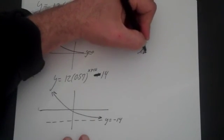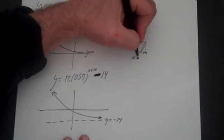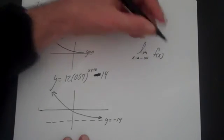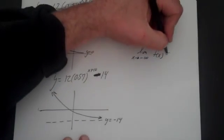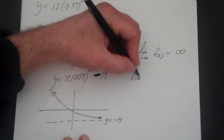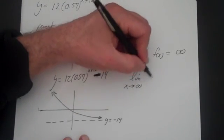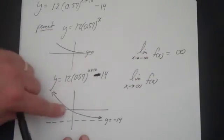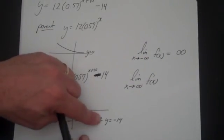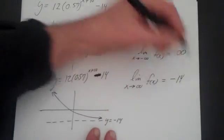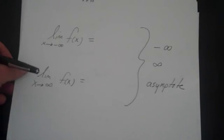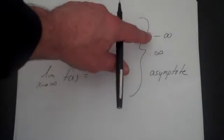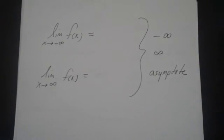The graph remains more or less the same shape. The limit as x goes to negative infinity of f(x): as x goes to negative infinity, y goes to positive infinity. And the limit as x goes to positive infinity of f(x): it gets closer and closer to the asymptote, so that's minus 14. And that's how you do end behavior of exponential functions. The key is there are only three possible answers: negative infinity, positive infinity, or the asymptote.